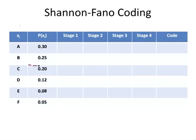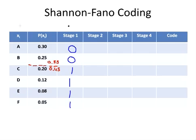We're going to partition it here. 0.55, which is the sum of the probabilities of A and B, and 0.45, which is the sum of the probabilities below. That's as close as we can get to equal probability. For everything above the partition, we assign 0, and everything below the partition, 1.